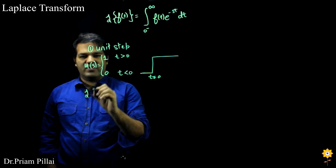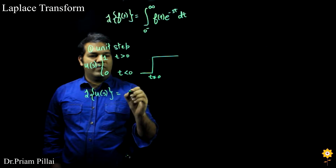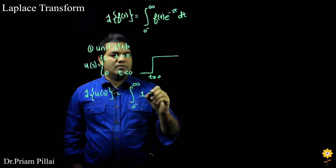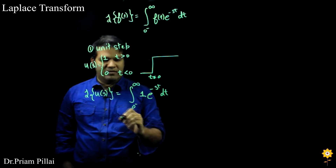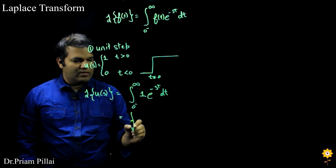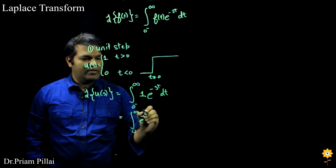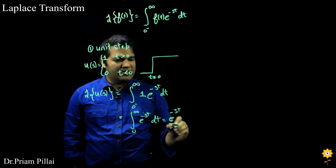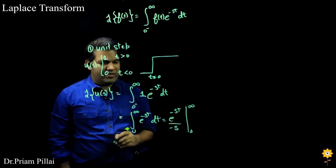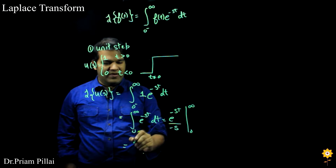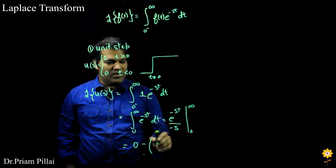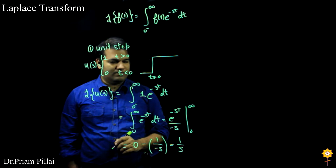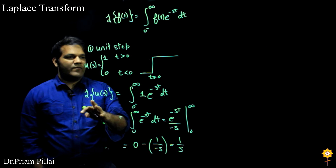What happens if we take the Laplace transform of this unit step? We get the integral from 0 to infinity of 1 times e to the minus st dt, which equals the integral from 0 to infinity of e to the minus st dt. That evaluates to e to the minus st over minus s from 0 to infinity. Plugging in the limits, e to the minus infinity is 0 and e to the 0 is 1, giving us 1 over s. So the Laplace transform of the step function is just 1 over s.